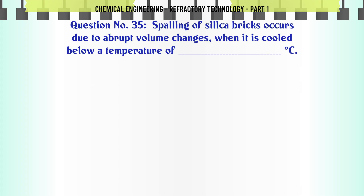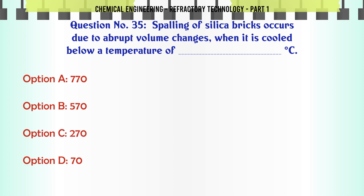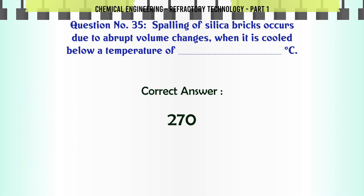Spalling of silica bricks occurs due to abrupt volume changes when it is cooled below a temperature of ___ °C. A. 770, B. 570, C. 270, D. 70. The correct answer is 270.